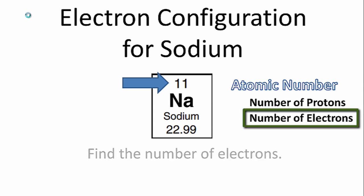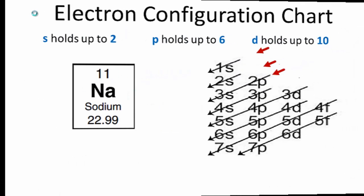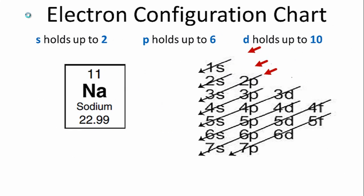And once we have those electrons, we can write the electron configuration for sodium. We'll use the table on the right to write the configuration. Sodium has 11 electrons.